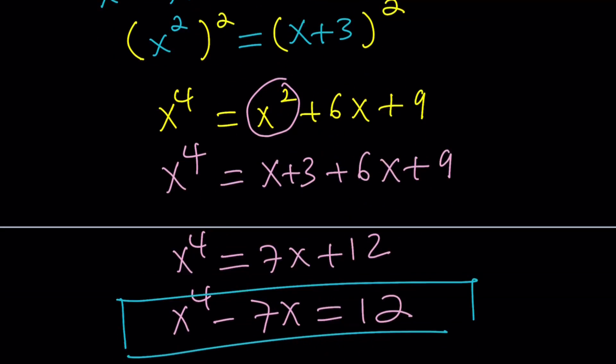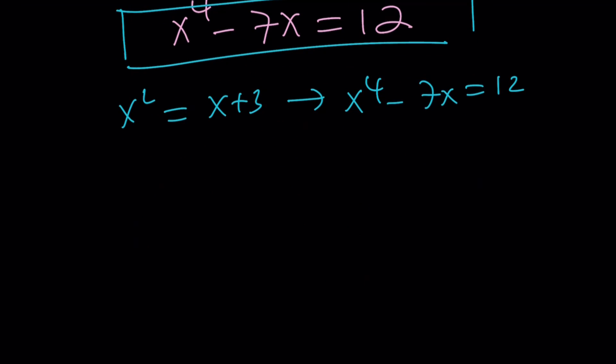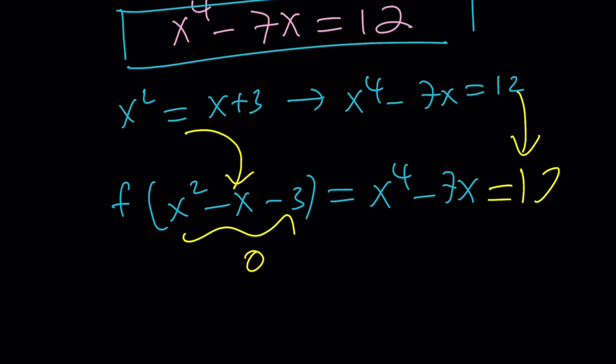If x squared is equal to x plus 3, then x to the fourth minus 7x will be 12. But, our expression already had this. Therefore, if this is 0, which means x squared is x plus 3, then this x to the fourth minus 7x will be 12. Therefore, that will be the answer.